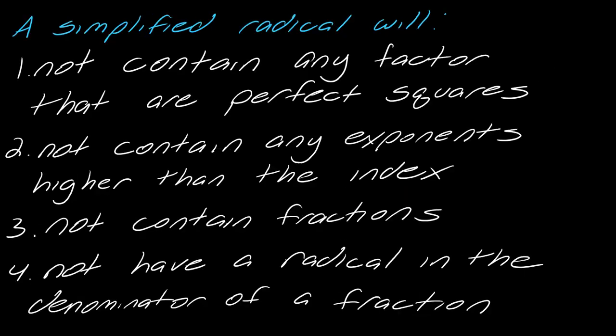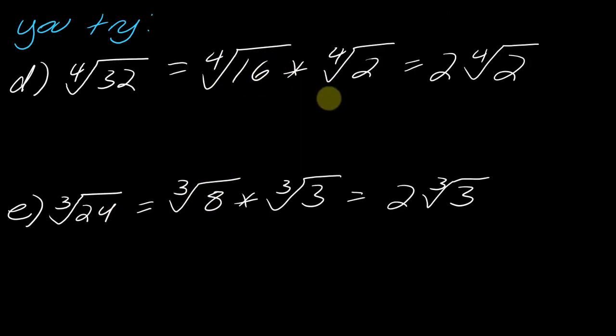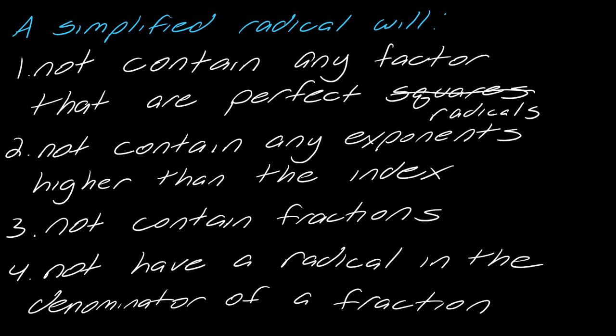So the next thing I want to talk about is how to identify a simplified radical. I have a list of four things for how you know if a radical is actually fully simplified, and we're going to talk about all of these things over the course of several videos. The first thing is that a simplified radical will not contain any factors that are perfect radicals — that's what we're working on in this lesson. A simplified radical will not contain any exponents higher than the index. A simplified radical will not contain any fractions. And a simplified radical will not have a radical in the denominator of a fraction.